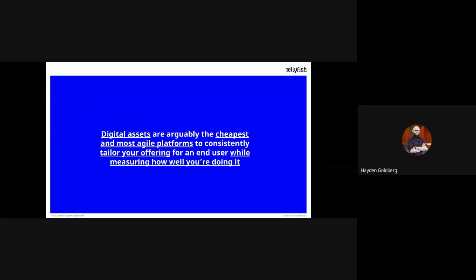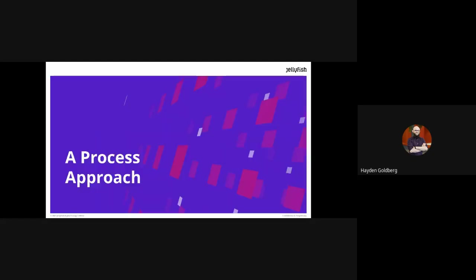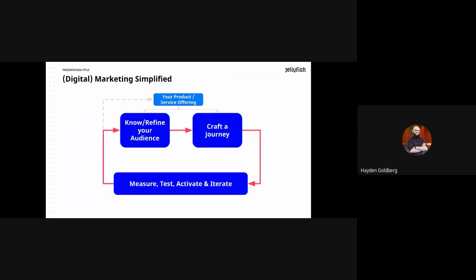Digital assets are arguably the cheapest and most agile platforms to tailor your offering on while measuring them. That's why we talk about web analytics and social media and all the different kinds of platforms — they're really easy to measure, easy to change, and craft journeys on. I wanted to go into a process approach around how we look at business and marketing and doing this especially online. I tried to simplify the steps and processes you'd want to do as a business, especially in digital marketing.